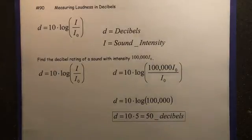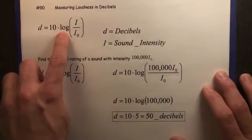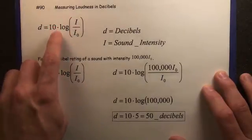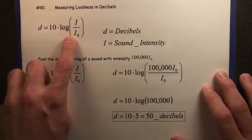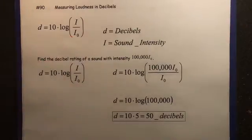Number 90, measuring loudness in decibels. This is the formula. Decibels equals 10 times log of sound intensity over I sub zero, which is the sound intensity that the average person can hear, the smallest amount that they can possibly hear. It's usually 10 to the negative 12.